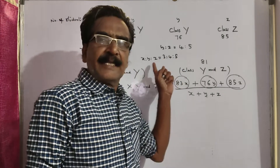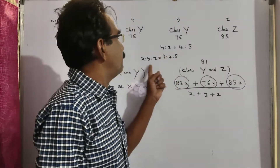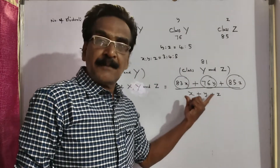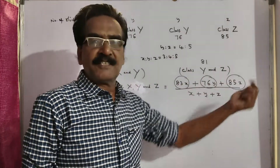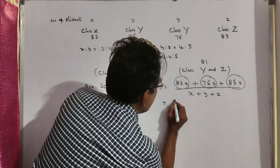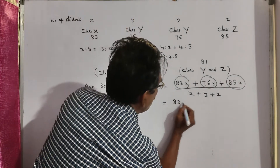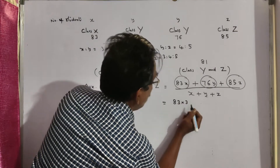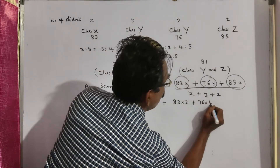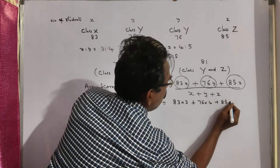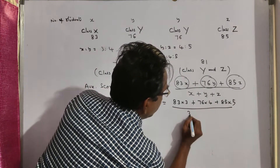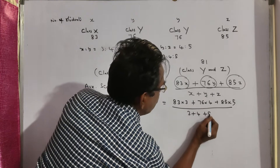So you can take X equal to 3, Y equal to 4, and Z equal to 5. Anyway, the denominator is also X plus Y plus Z, so it doesn't make any difference. Now: 83 multiplied by small x equal to 3, plus 76 multiplied by small y equal to 4, plus 85 multiplied by small z equal to 5, divided by the total number of students 3 plus 4 plus 5.